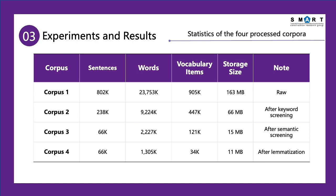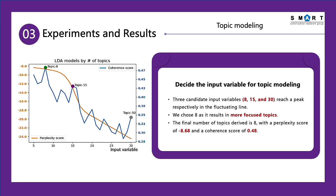This is a breakdown of the four corpora formed during the whole process. The figure shows the perplexity score and coherence score with different numbers of topics that we tried. Three candidate input variables — 8, 15, and 30 — each reach a peak in the fluctuating line, as you can see in the figure. We chose 8 as the number of topics, as it results in more focused topics.